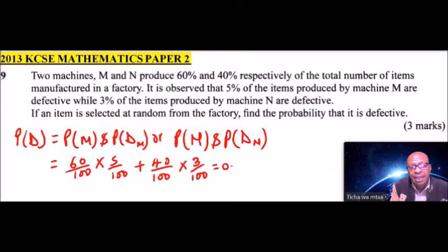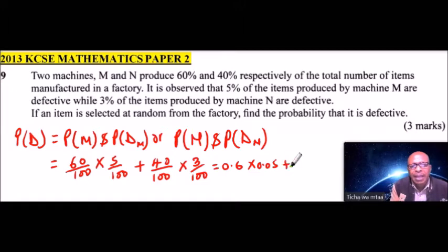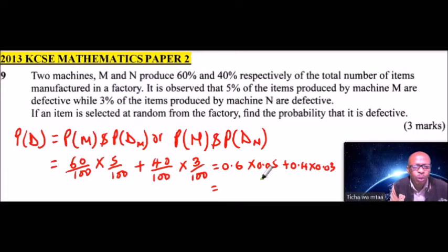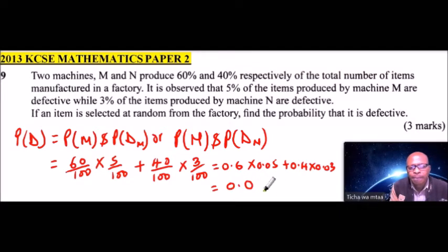Simplifying, this is 0.6 multiplied by 0.05, plus 0.4 multiplied by 0.03. You can use your calculator here, and you will get this equals 0.042.